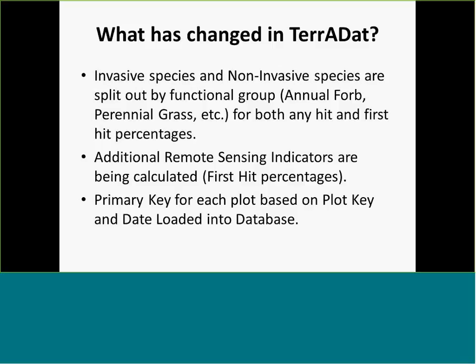We've also added a massively bigger suite of remote sensing indicators. Basically everything we're calculating for terrestrial, we're calculating for remote sensing. We're calculating a whole bunch of indicators for any hit — which we're calling the terrestrial AIM data — and then for the first hit, so when you're looking at it from above, the first thing you hit. We're calculating those indicators as well because those are the useful indicators for remote sensing. We can use them nationally, and you can use them at the state level.